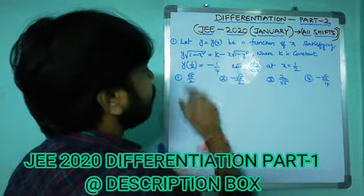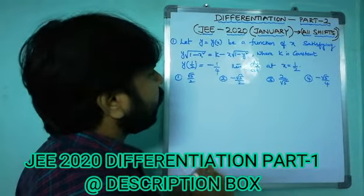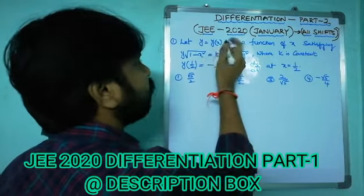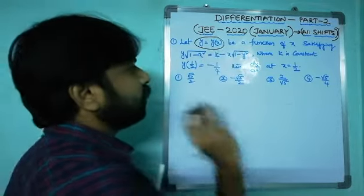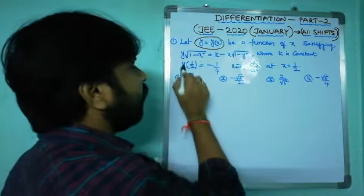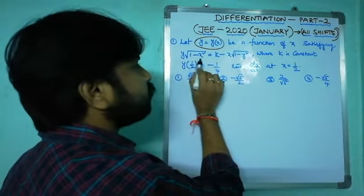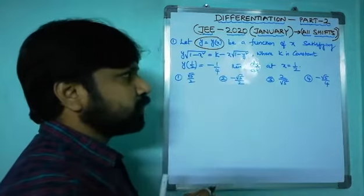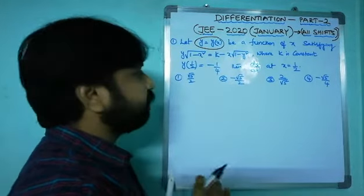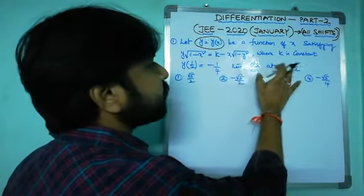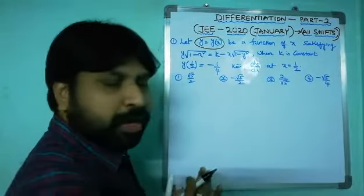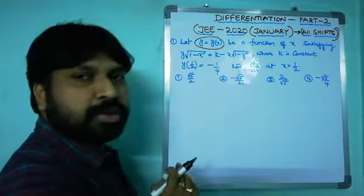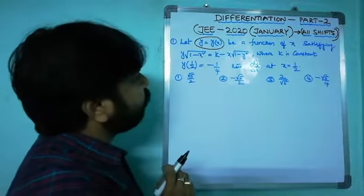Here, y and y(x) are the same function. The given relation is y√(1-x²) = k - x√(1-y²), and we need dy/dx at x = 1/2 using the given condition y(1/2) = -1/4.